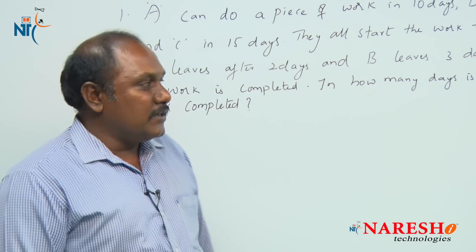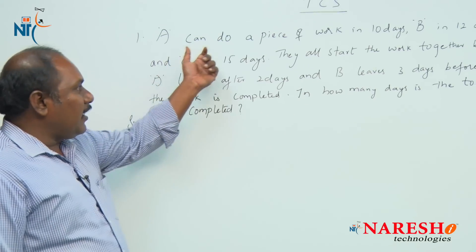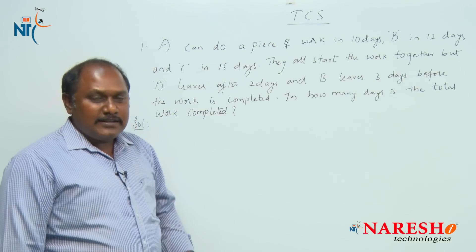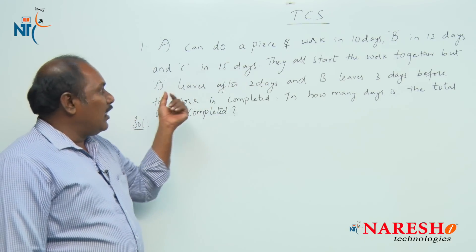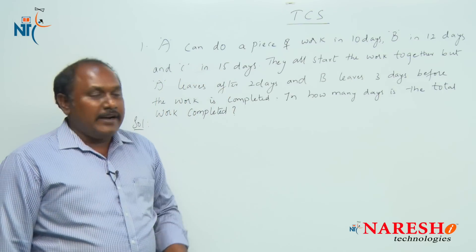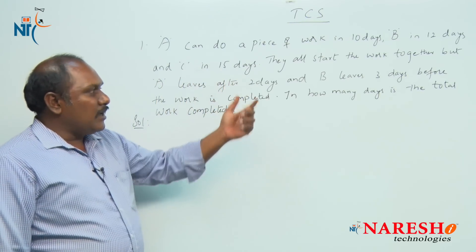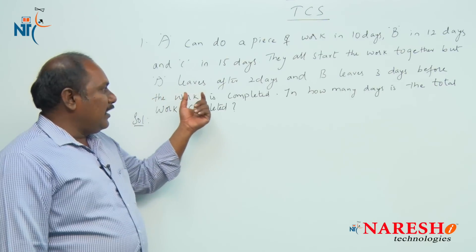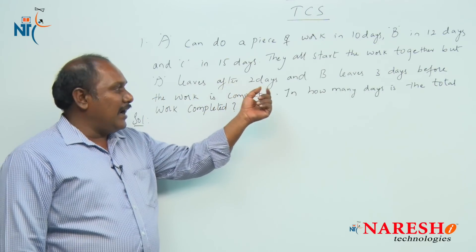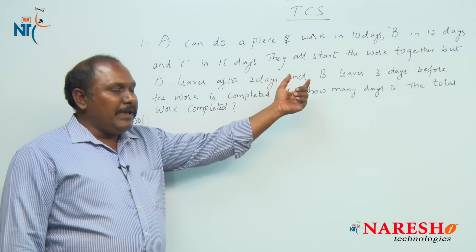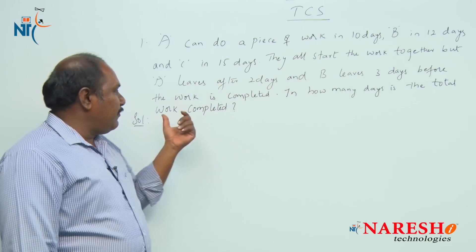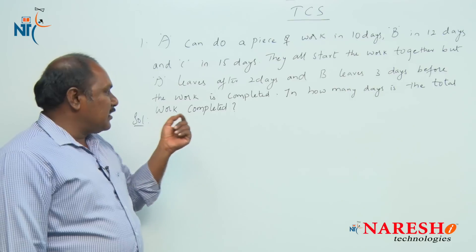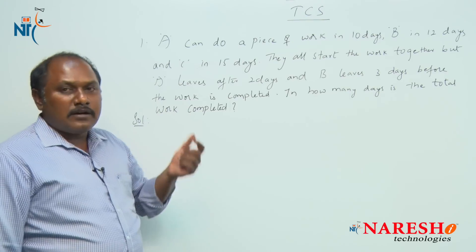The first question: A can do a piece of work in 10 days, B in 12 days and C in 15 days. They all start the work together, but A leaves after 2 days and B leaves 3 days before the work is completed. In how many days is the total work completed?